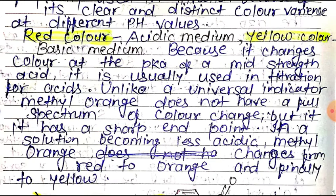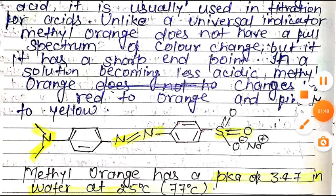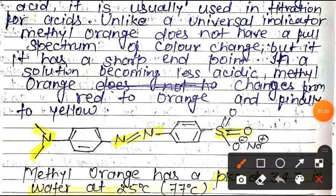In a solution becoming less acidic, Methyl Orange changes from red to orange, and finally to yellow.